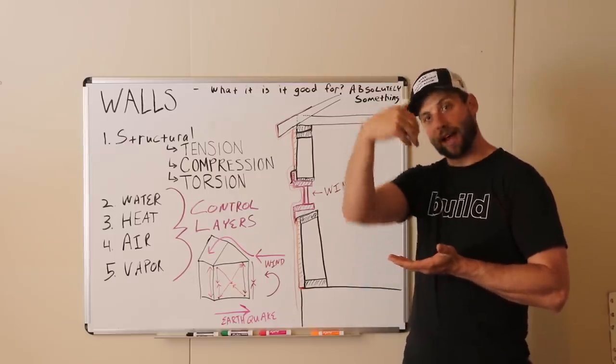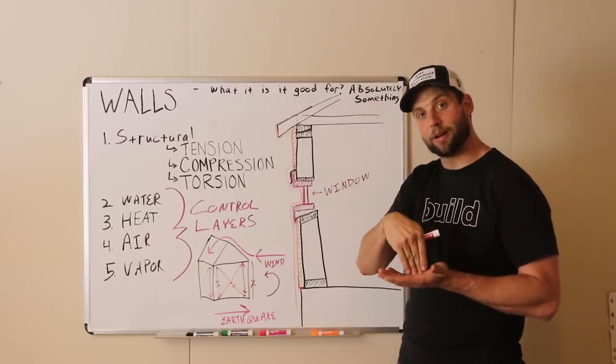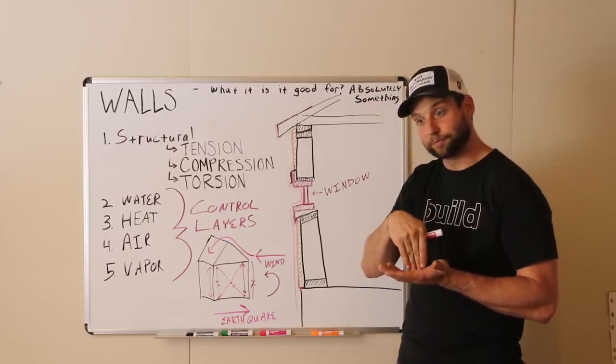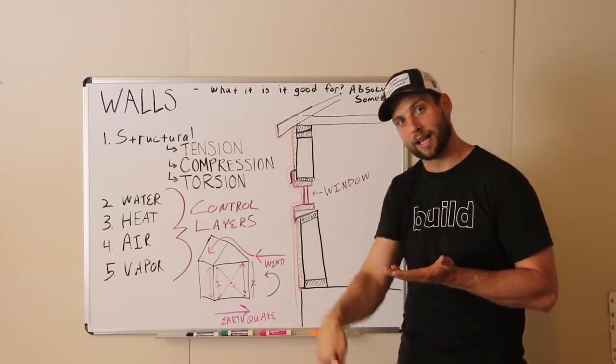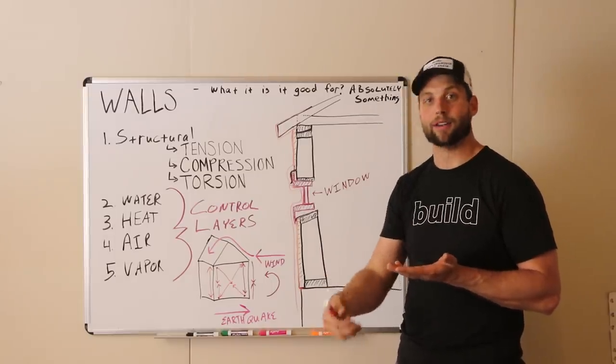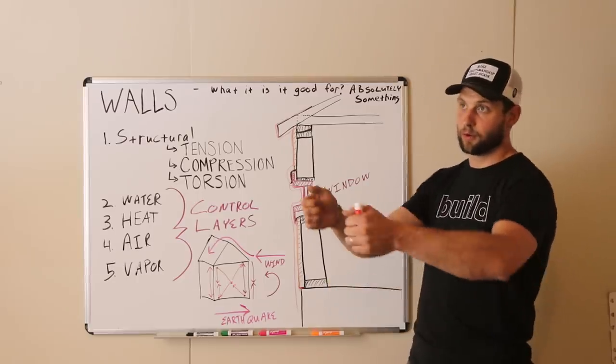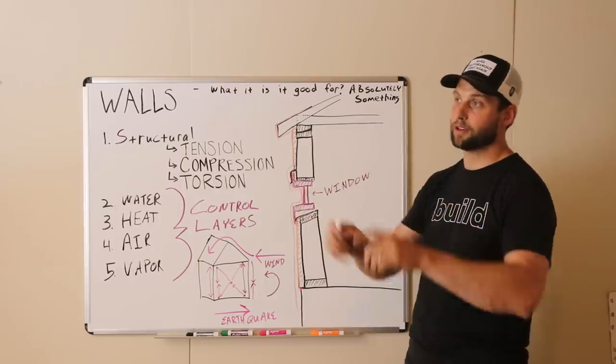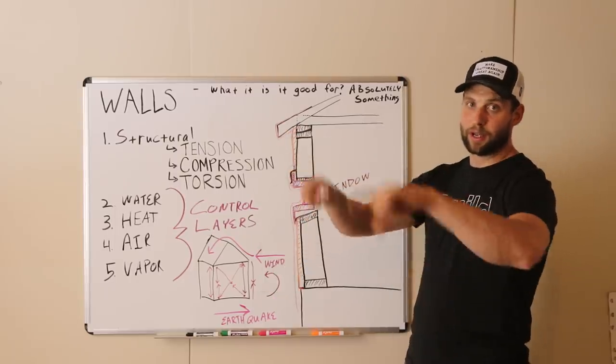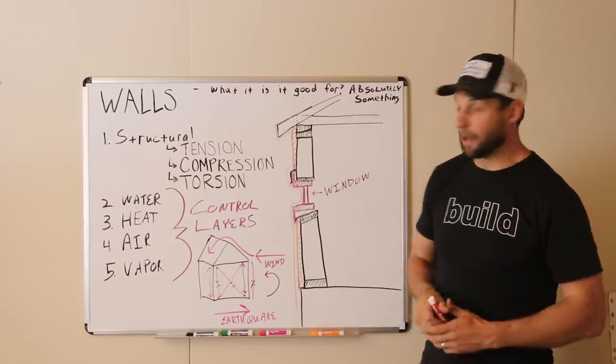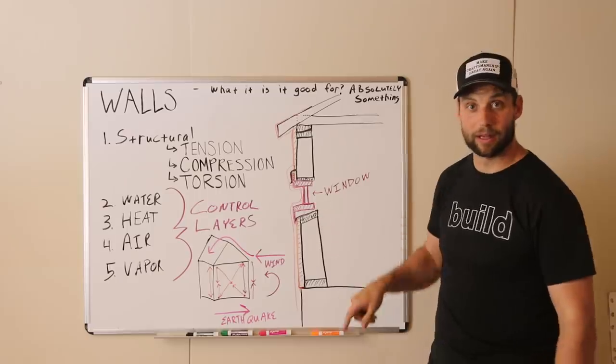so that water that hits the pane of glass comes down and hits the top of your window sill and then runs to those corners and gets in behind your WRB. You've seen it if you've done any remodels. Most of the time when you pull out windows, if there's going to be water damage, it's going to be at the two corners of the window.